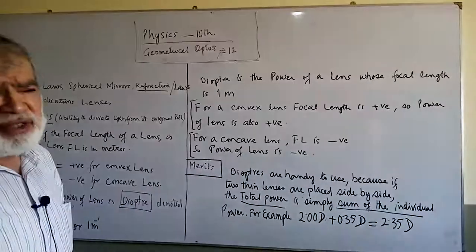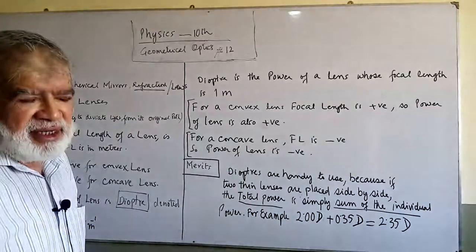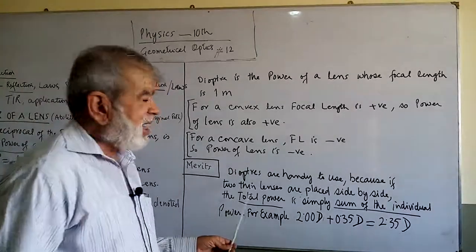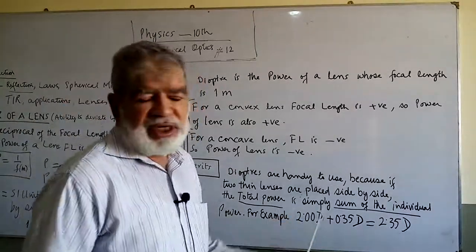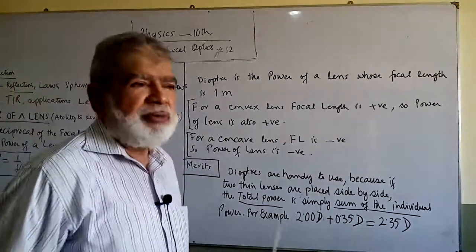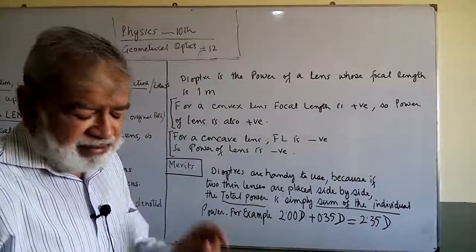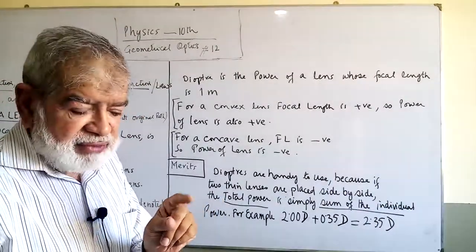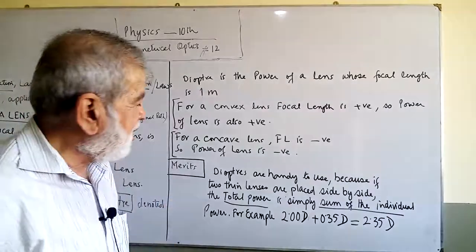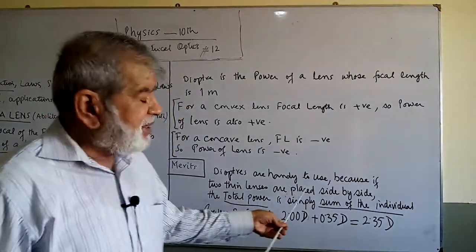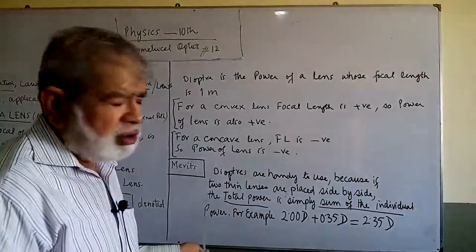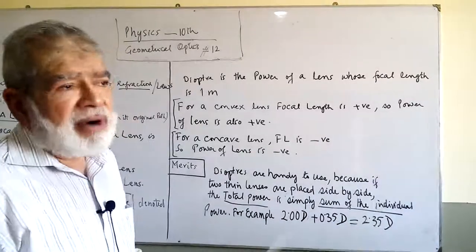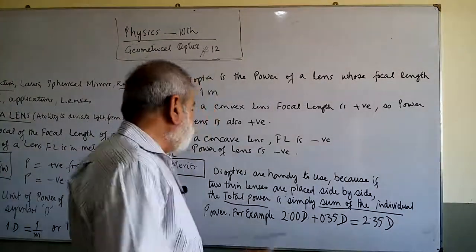What is the merit of this SI unit diopter? What are the advantages of it? Diopters are handy to use because if two thin lenses are placed side by side, the total power is simply the sum of the individual power. You can simply add. This is the merit of using diopter as the power of the lens.